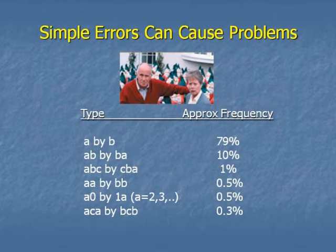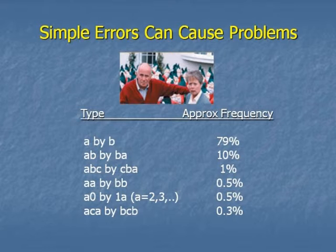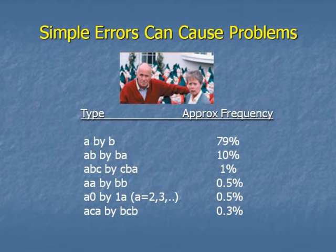Research that people do on documents shows that these are the most common types of errors you make. The first — just replacing one number or letter by a different one — happens nearly 80% of the time. Inversions, where instead of writing two letters in order you write them transposed, account for about 10%; doing it with three characters is about 1% of the time. Errors with repeated doubles or letters and numbers are all about a fraction of a percent. So in practice we're rather prone to making these sorts of errors — some of which are just spelling errors, like spelling 'receivers' with IE instead of EI.